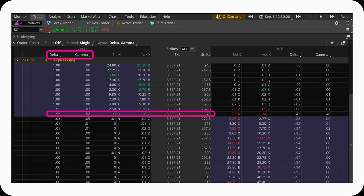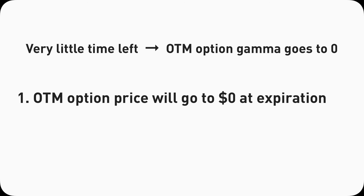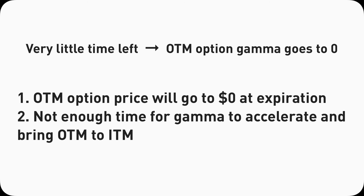Gamma for out of the money options will actually stop growing and instead head to 0 when the market closes on the expiration date. We can look at those out of the money Square calls — the 275, 280, 285, 290 — they're either 0 or going to 0. This makes sense because we know the price of any option contract goes to 0 if it is out of the money at market close on expiration date. And theoretically, if it's still out of the money and there's not enough time left for the stock price to go up, Gamma as a Delta accelerator would not mean anything anymore.